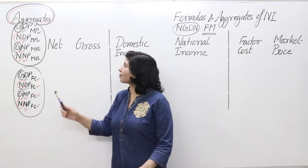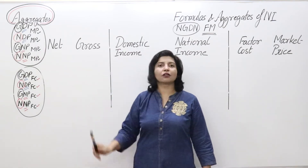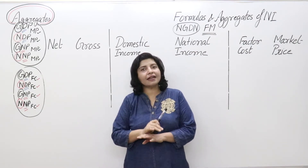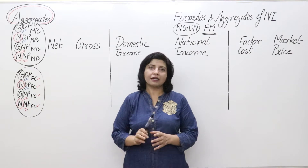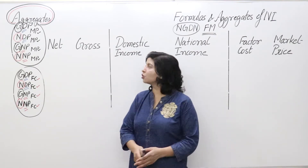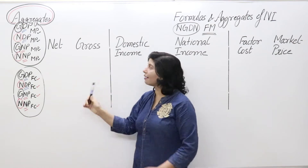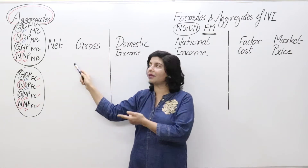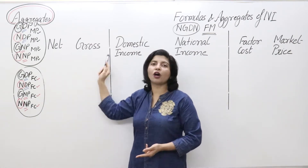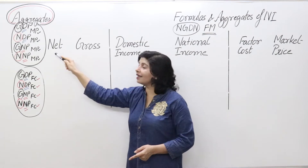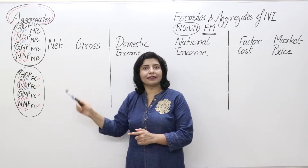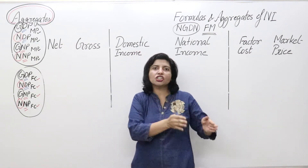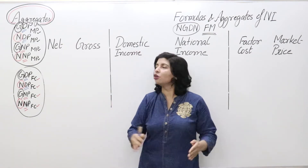First, understand Gross and Net. Gross means the total or whole of something from which nothing has been deducted — it hasn't been shortened at all. Net means a part of gross; it is always smaller. Gross is the larger concept. Whenever you see the word 'net,' something has been deducted from the gross figure.